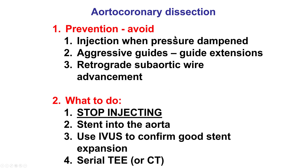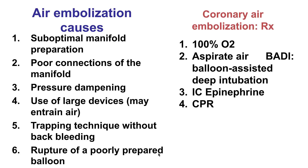What to do if there is aortocoronary dissection? The main thing to not do is inject contrast, because that can enlarge the dissection — so stop injecting. The treatment is by placing a stent all the way into the aorta, confirming that the placement is good with intravascular ultrasound, and then potentially doing serial TEE or a CT scan of the chest to ensure there is no extension of dissection more distally.